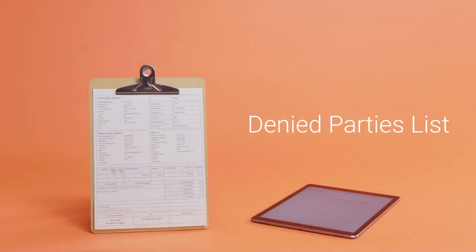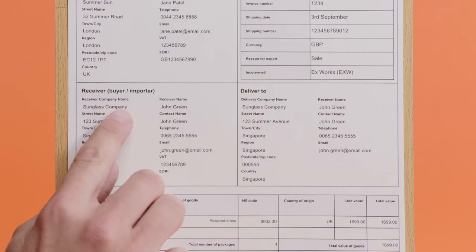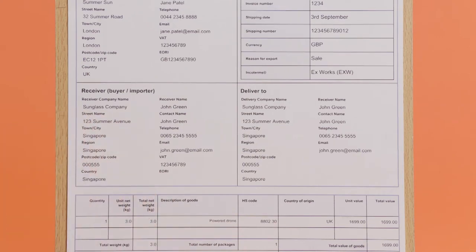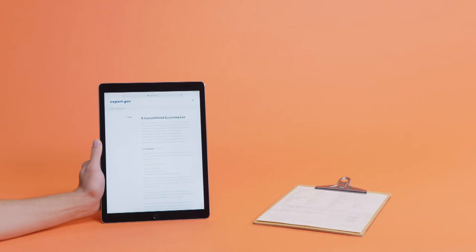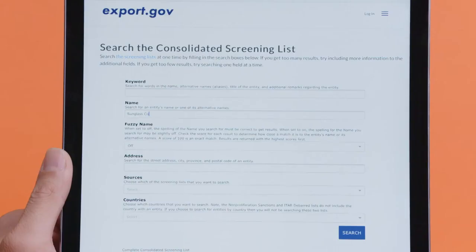Third is the Denied Parties List. Is the company or individual you're shipping to reputable? If they're not and are listed as a Denied Party, you won't be able to ship to them. You can find an example of some of the U.S. Denied Parties Screening Lists on the Bureau of Industry and Security's website.